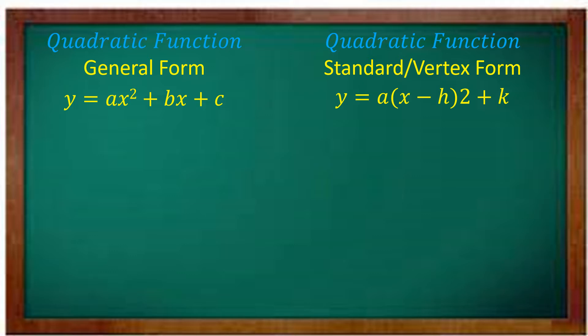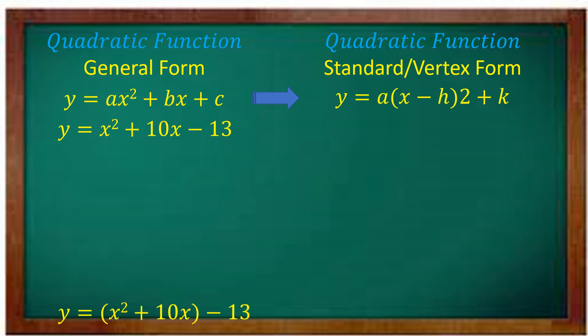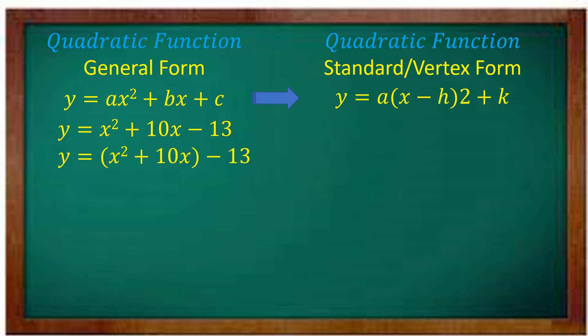How do we transform a quadratic function in general form into its vertex form or standard form? For example, we have y is equal to x squared plus 10x minus 13. The first thing we should do is to separate the constant term. It will become the quantity of x squared plus 10x, minus 13. The two terms inside the parentheses, you will make into a perfect square trinomial.